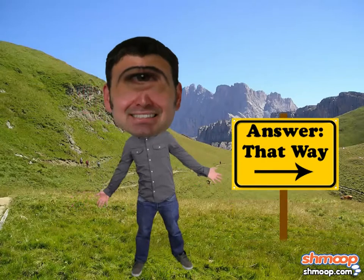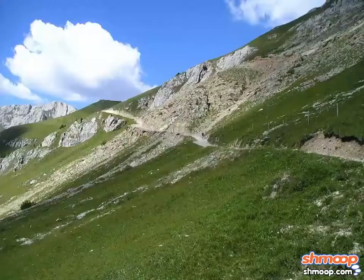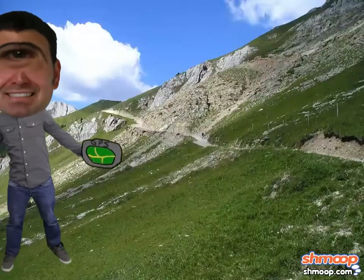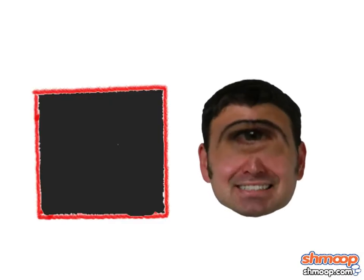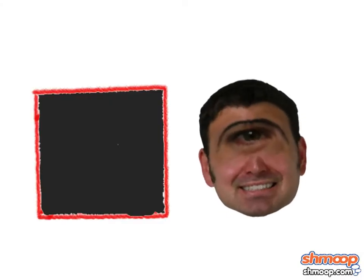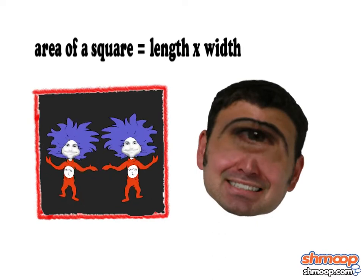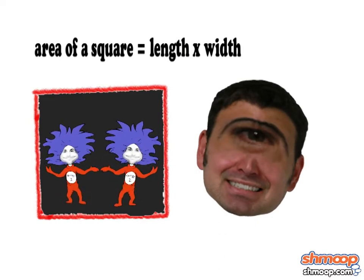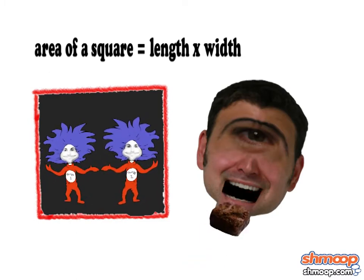Then you need to come up with a way to get to the answer — in this case, the GPS app on your smartphone probably won't cut it. Many times you'll need to use certain formulas, for say, area. Area of a square equals length times width. It's okay to not memorize formulas as long as you understand them, but brownie points if you do know them by heart.